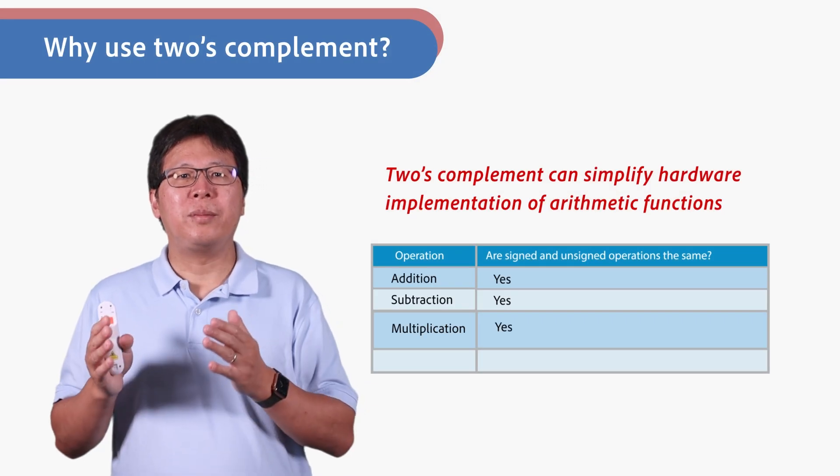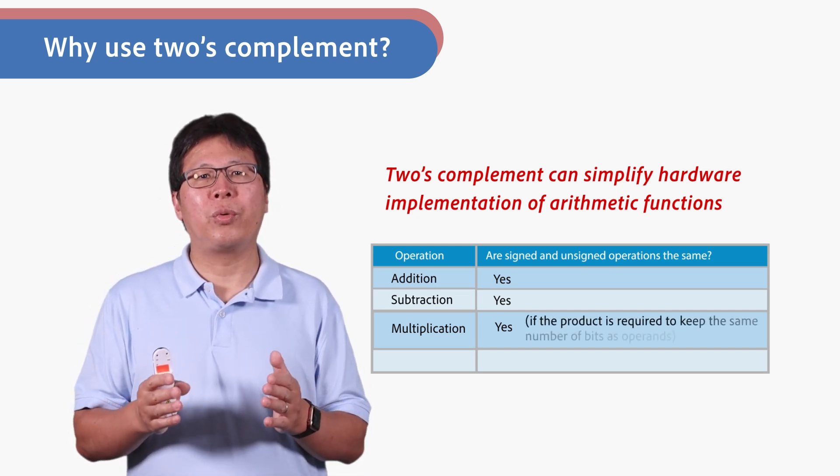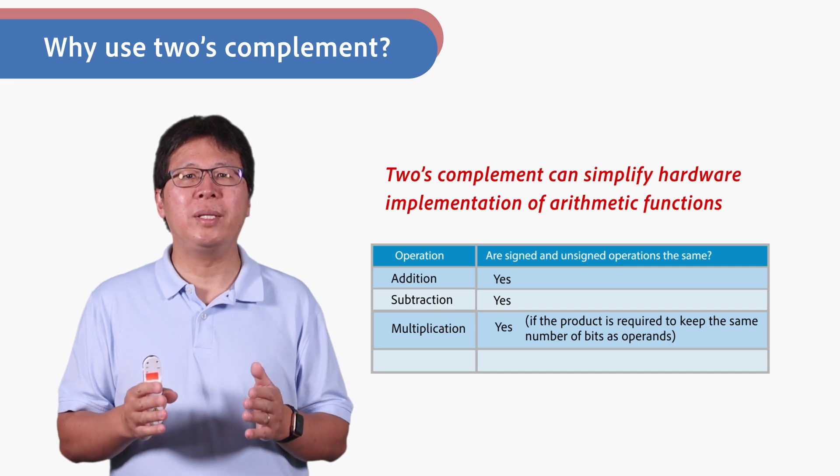For multiplication, the multiplication hardware can also ignore the sign of operands if the product is required to keep the same number of bits as operands.